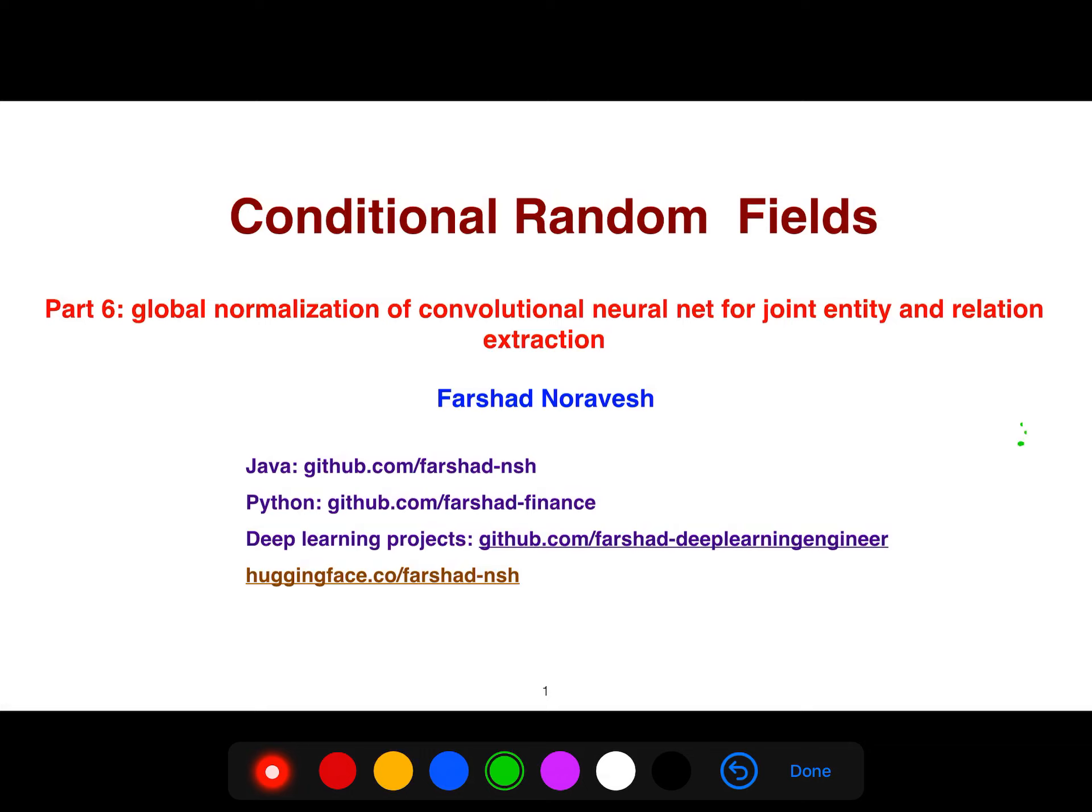Finally, I want to explain this great article about global normalization. They do joint entity recognition and relation extraction—NER and relation extraction both jointly.